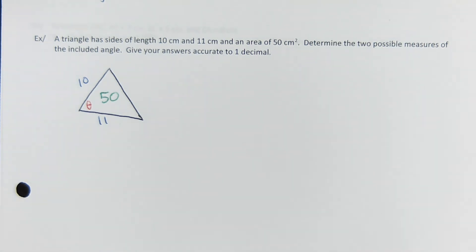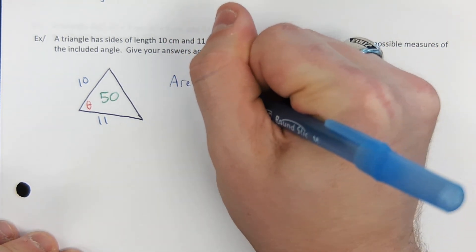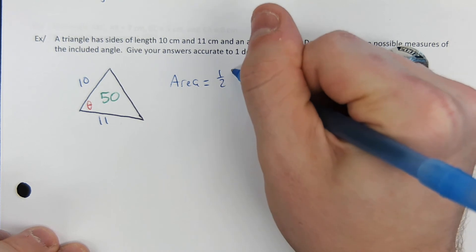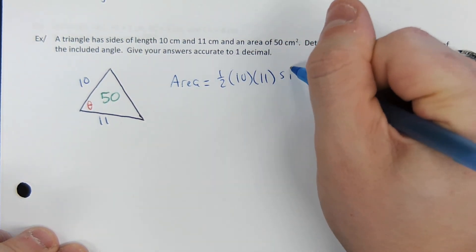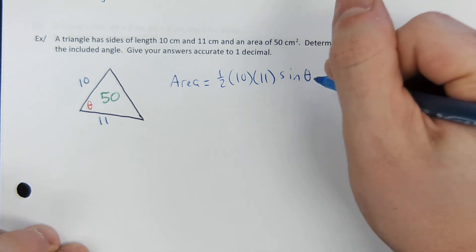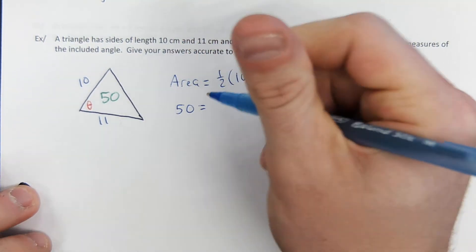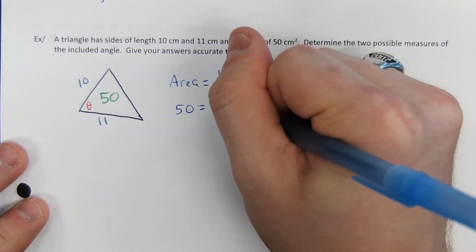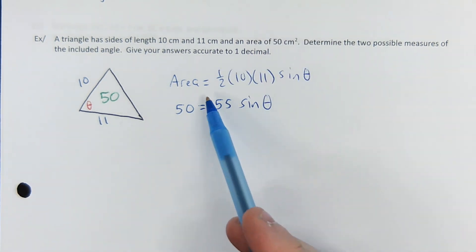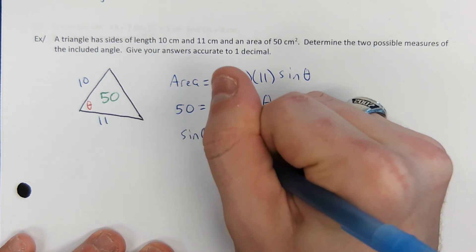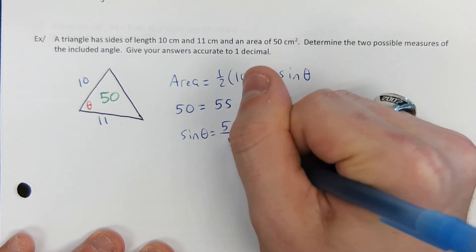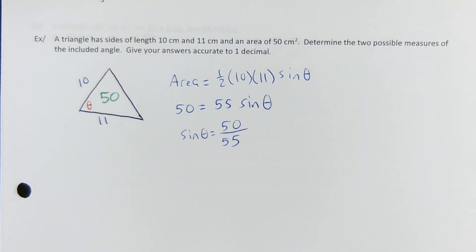Let's solve for theta. The area is one-half side one times side two times the sine of theta. The area is 50, that's a known. So 50 equals, and this is 55 sine of theta. I just simplified half of 10 is 5, 5 times 11 is 55. So let's get sine of theta by itself. Divide both sides by 55. Sine of theta is 50 over 55.